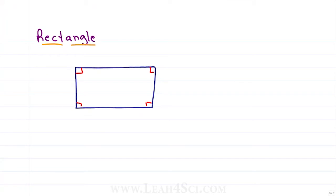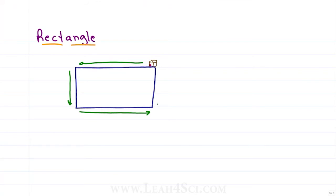If this rectangle is a neighborhood block, what is the perimeter? How long will it take you to walk around? Let's say your house is right here on the corner. To walk around the block, you may start by walking the long side, then take a turn to go down the short side, take another turn to walk back on the long side, then walk back up the short side to get back to your house. How much did you walk?